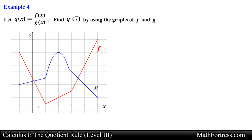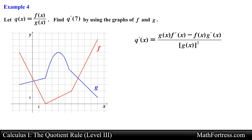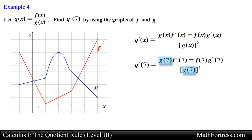Let's go over the final example. Let q of x equal f of x over g of x. Find q prime of 7 by using the graphs of f and g. Similar to the previous example, we need to find the derivative of this function evaluated at a specific value of x. Applying the Quotient Rule we obtain the same form of expression. Having found an expression for the derivative, we evaluate it at x equals 7, which requires g of 7, f of 7, g prime of 7, and f prime of 7.